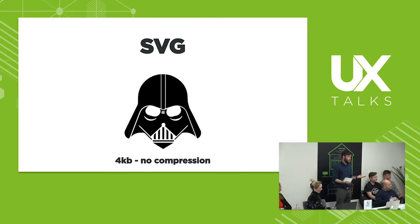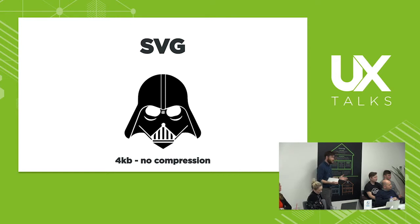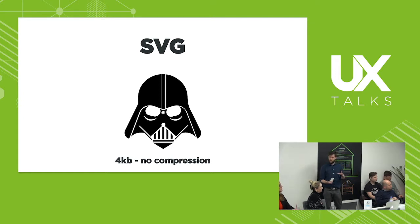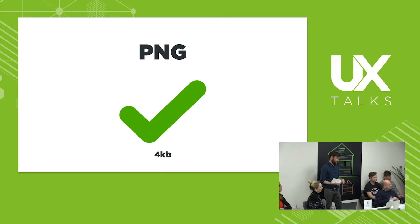So this is an SVG — this is four kilobytes, exactly the same file size as the PNG. But you can see that it is crisp as anything. And the reason for that is because it's a scalable vector graphic — it's scalable, and it doesn't use pixels, but I'll get into that in a minute.